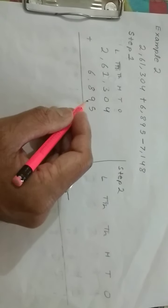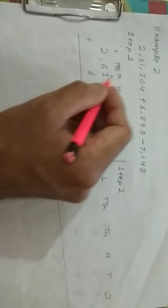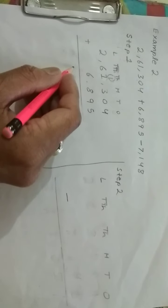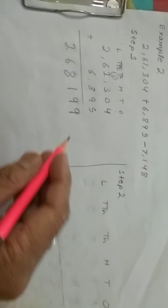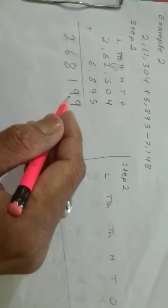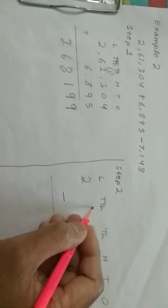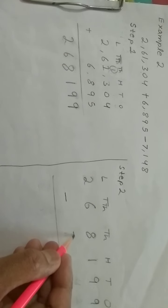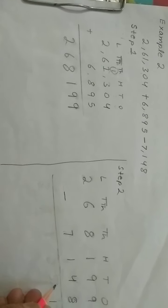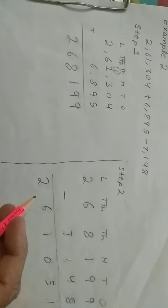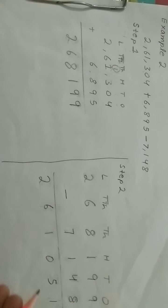Adding 2,61,304 and 6,895: 5 plus 4 is 9. 0 plus 9 is 9. 3 plus 8 is 11, write 1, carry 1. 6 plus 1 is 7, plus 1 carry is 8. No number above, so write 6 and 2 as they are. We have got the sum 2,68,199. Now second step: subtract 7,148 from 2,68,199. 9 minus 8 is 1. 9 minus 4 is 5. 1 minus 1 is 0. 8 minus 7 is 1. Bring down 6 and 2. So our answer is 2,61,051.